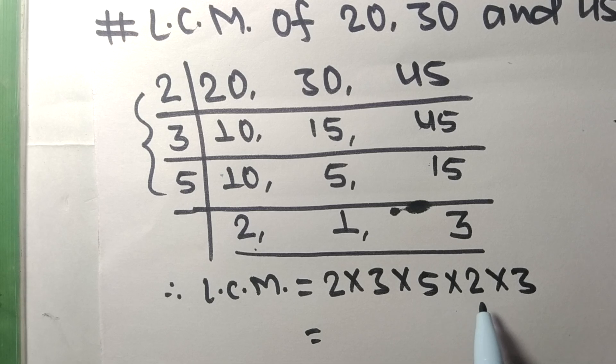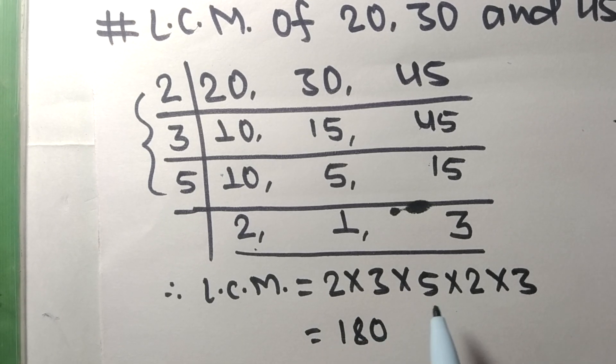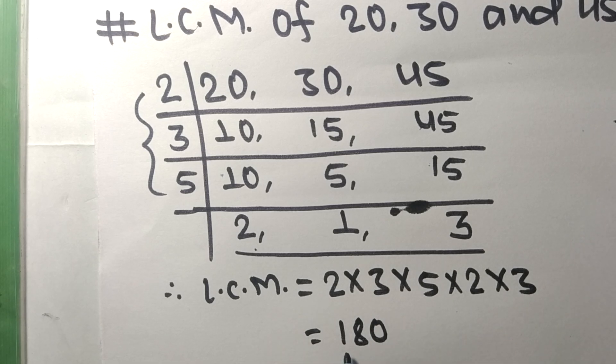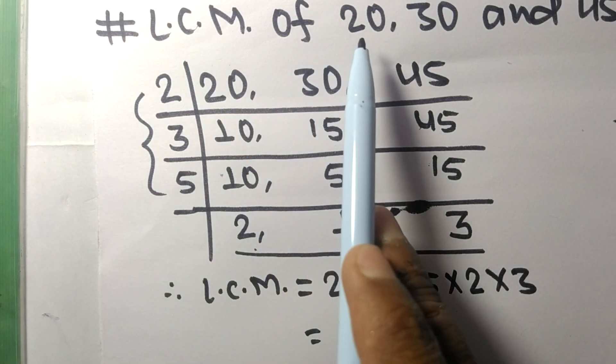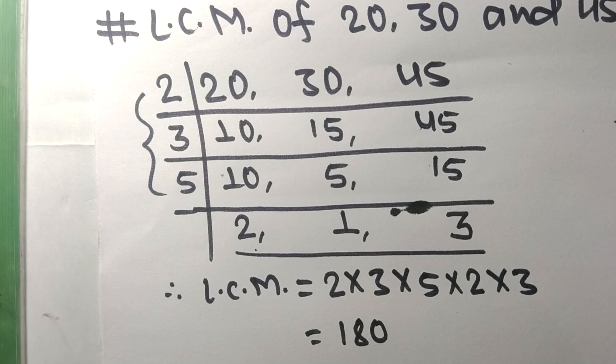2 equals 60, 60 times 3 equals 180. So by multiplying all these numbers we got 180. So 180 is the LCM of 20, 30, and 45. This is all for today, and thanks for watching.